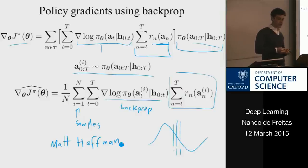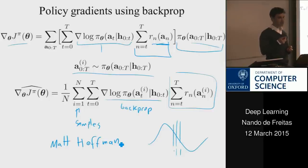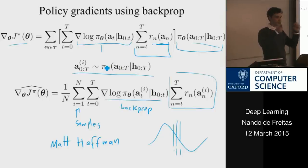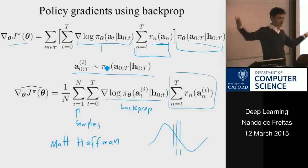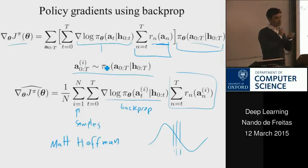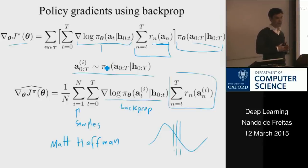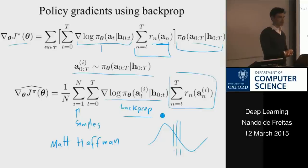One algorithm called PEGASUS uses common random numbers: freeze the random seed for simulations. If you want to compare who's best at flying a kite — someone in Brighton vs. Oxford — you can't fairly compare in different random environments with different wind conditions. Freeze the same random conditions when comparing two policies. There's a vast literature on policy gradients, but this gives the gist. With Torch, you get the derivatives of the recurrent net automatically, so you can easily implement this and do what the DeepMind folks did.